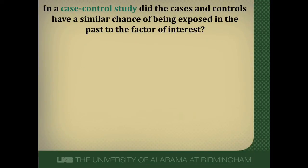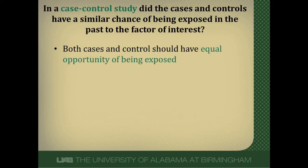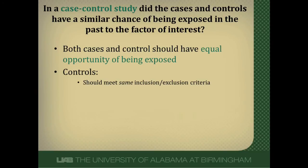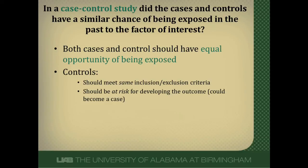If you're dealing with a case-control study, you'll have a slightly different question: do the cases and controls have a similar chance of having been exposed in the past to the factor of interest? Cases are people with disease; controls are people who didn't have disease. In a case-control study, we go backwards to look for exposures. Cases and controls should have equal opportunity of having been exposed, and controls should meet the same inclusion and exclusion criteria as the cases. They should also be at risk of developing the outcome — meaning they could have become a case had they developed disease.